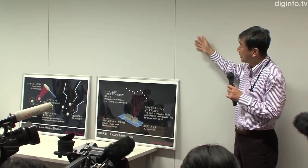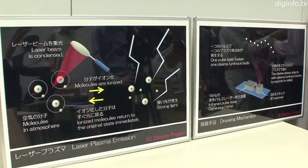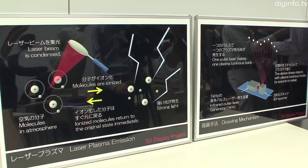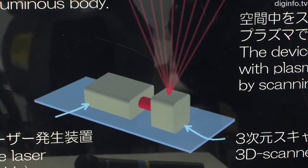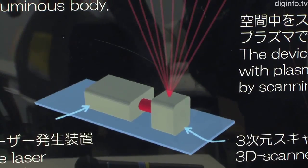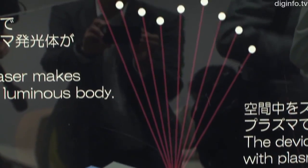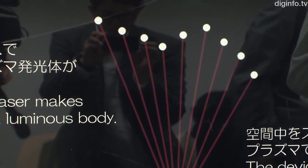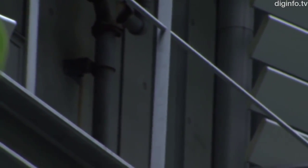The images are constructed by firing a 1kHz infrared pulse laser into a 3D scanner, which reflects and focuses the pulses of the laser to specific points in the air. The molecules at that point are ionized, and the energy is released as photons.